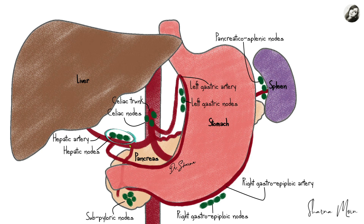We also have the hepatic nodes along the hepatic artery below the liver. So we have found the left gastric nodes, pancreatic-splenic nodes, right gastro-epiploic nodes, sub-pyloric nodes, and the hepatic nodes — and the key thing to remember is that all these lymph nodes ultimately drain into the celiac nodes. That concludes the first segment showing the different kinds of lymph nodes with their locations.